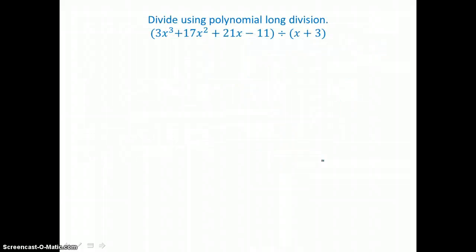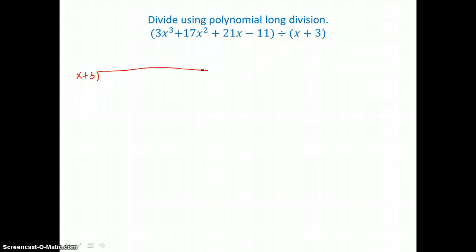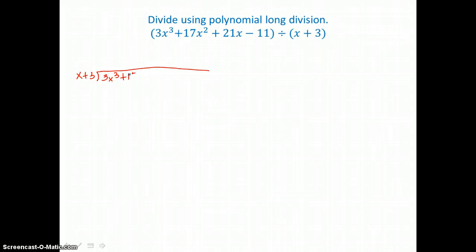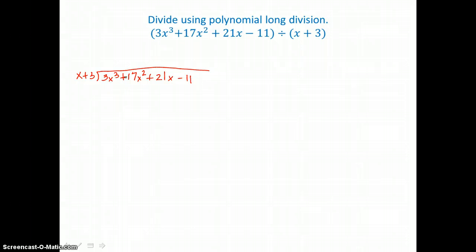Let's try polynomial long division again. Let's divide x plus 3 into this cubic: 3x cubed plus 17x squared plus 21x minus 11. Every degree is represented — 3, 2, 1, 0 — so we're ready to divide.